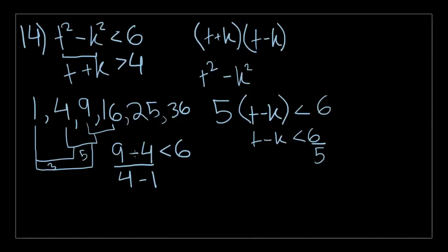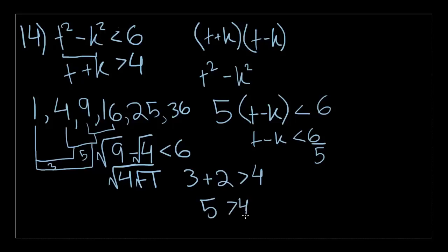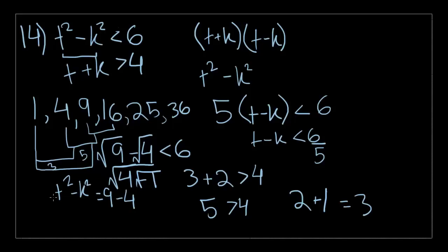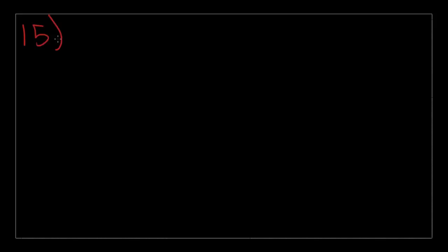Now we check whether t plus k is greater than four. Taking square roots: square root of 9 is 3, plus square root of 4 is 2, giving 5, which is greater than 4 — that works. For the other case: square root of 4 is 2, plus square root of 1 is 1, equals 3, which is not greater than 4 — so that fails. Therefore t squared minus k squared equals 9 minus 4, and the value of t is the square root of 9, which is 3. That's choice C.